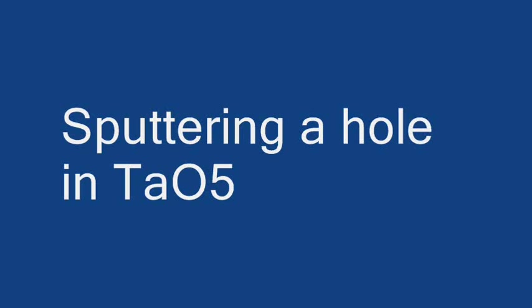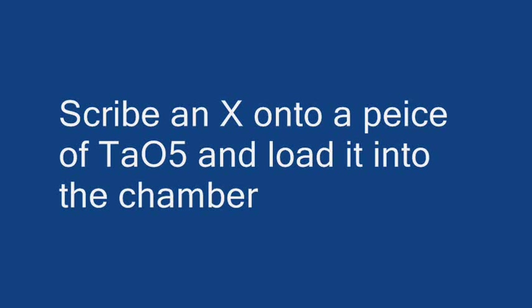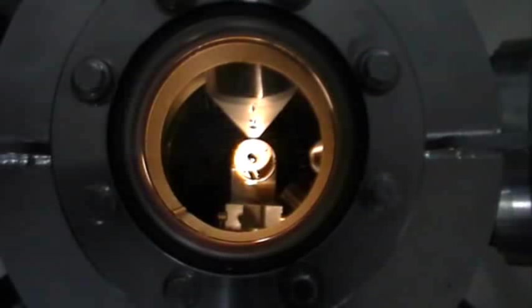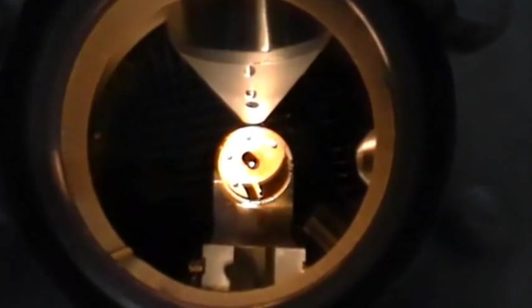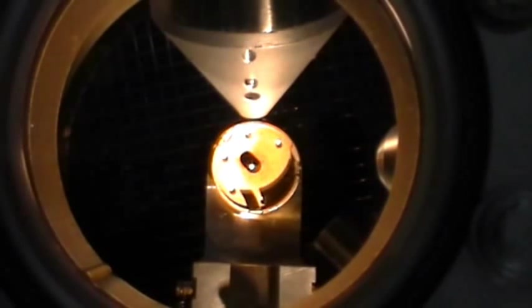Okay, the next method we're going to look at is using tantalum oxide to align the ion beam. In this case, we're going to scribe an X onto a piece of tantalum oxide and load it into the chamber. I've used an exacto knife to scribe an X into a piece that's about a half an inch by a half an inch. We're going to load it into the chamber here, again, looking in through the vacuum viewport.